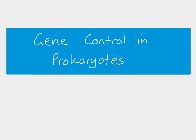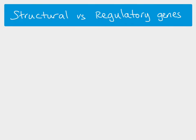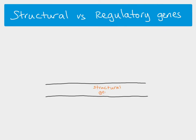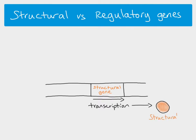In this video we're looking at gene control in prokaryotes. First, we need to understand the difference between structural genes and regulatory genes. If we have a length of DNA with a structural gene, when that gene undergoes transcription, it will produce — after translation — a structural protein: a protein which is used by the cell, either forming part of the cell structure itself or acting as a metabolic protein such as an enzyme.